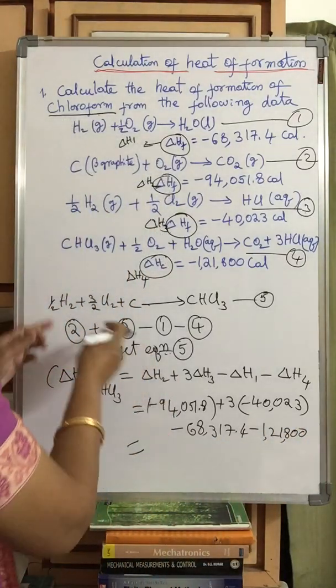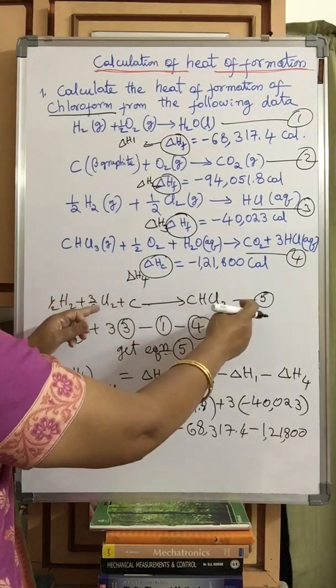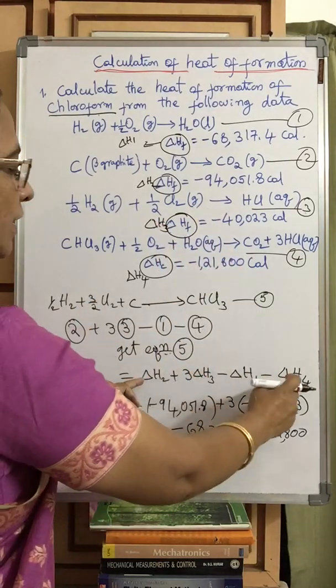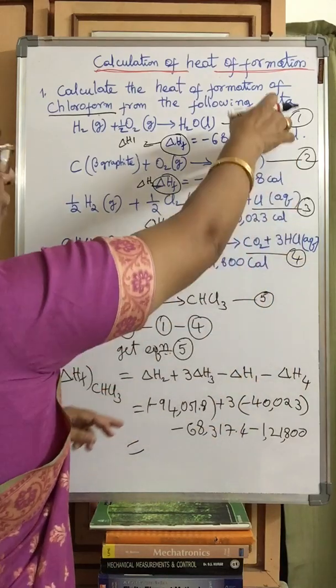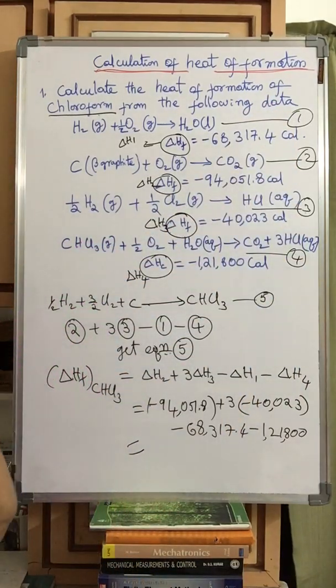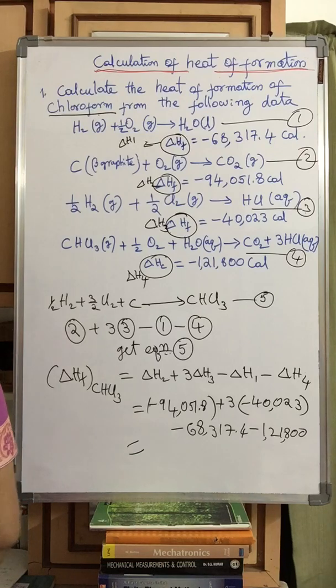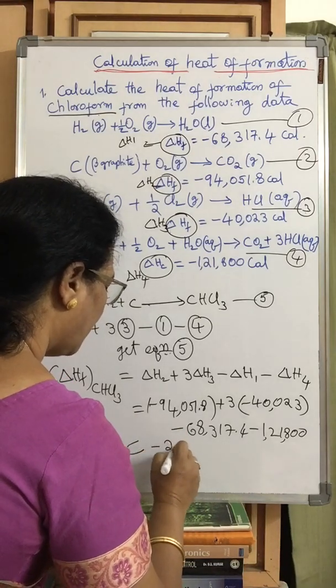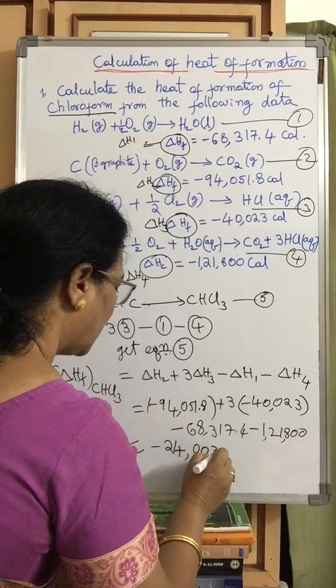Whichever way we have done this manipulation to get equation 5, the same manipulation must be done with the delta H values for the four equations. So this value is minus 24,000 calories.